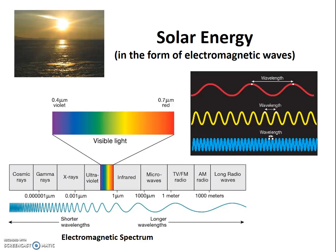Solar energy that reaches the Earth is in the form of electromagnetic waves. These waves can be classified by their wavelength — the distance from the top of one wave to the top of another. Wavelengths are measured in micrometers, a millionth of a meter. It takes a thousand micrometers to make a millimeter, or a million micrometers to make a meter.